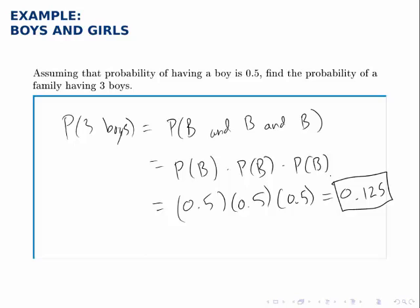What you'll find is that there are eight possibilities and one of them is boy boy boy. So the probability of that happening is one out of eight, and one out of eight is exactly 0.125.